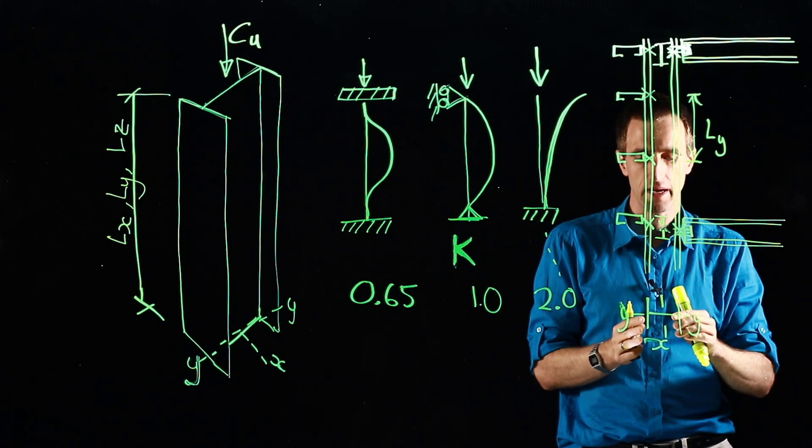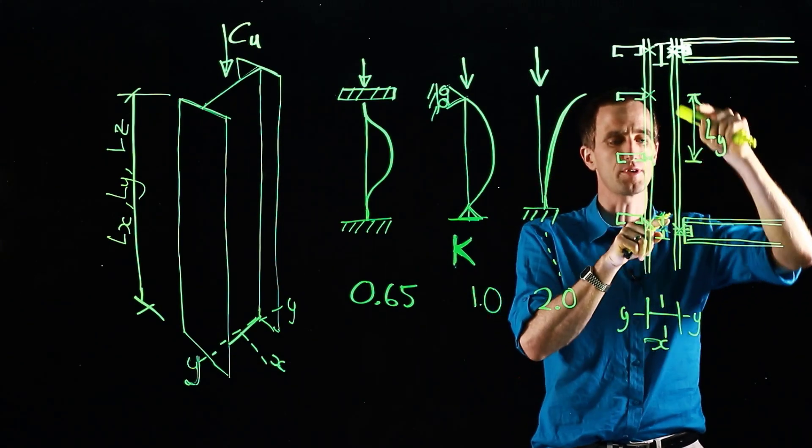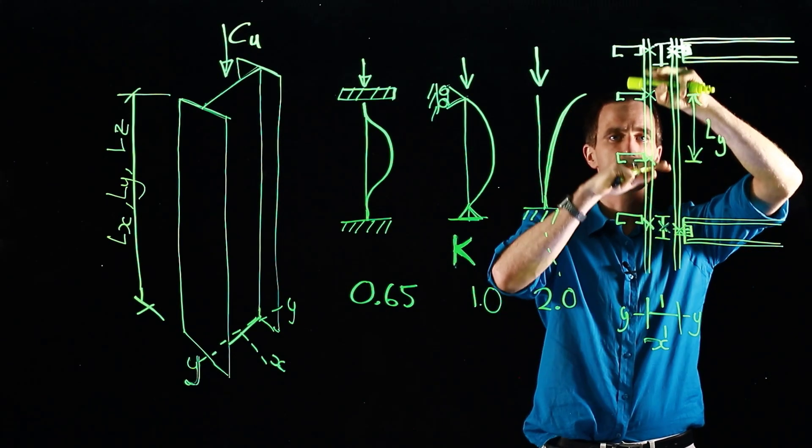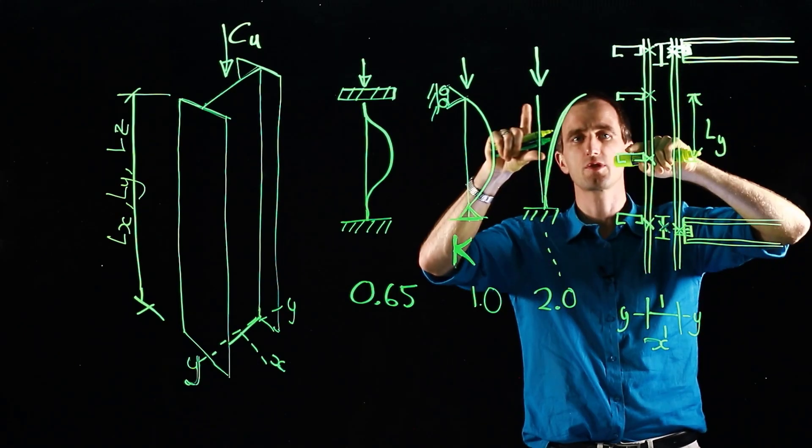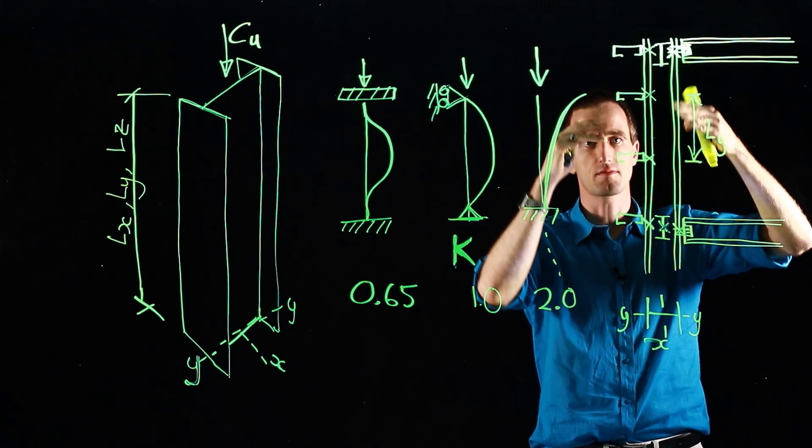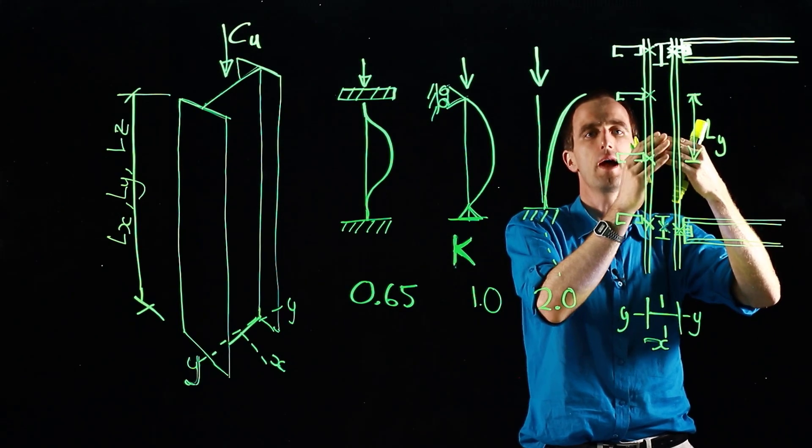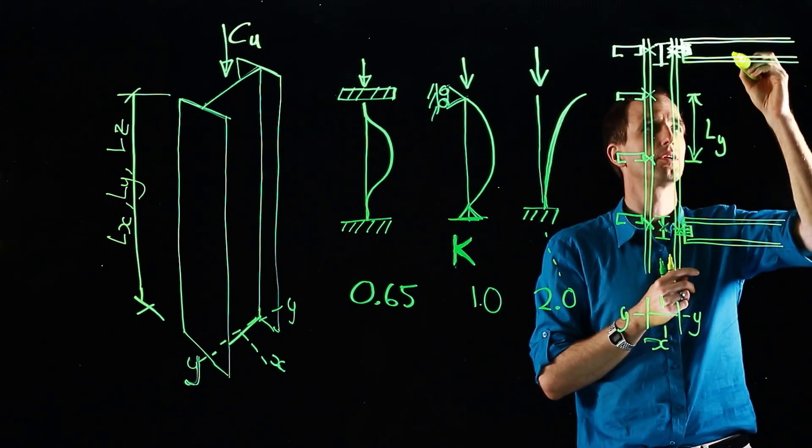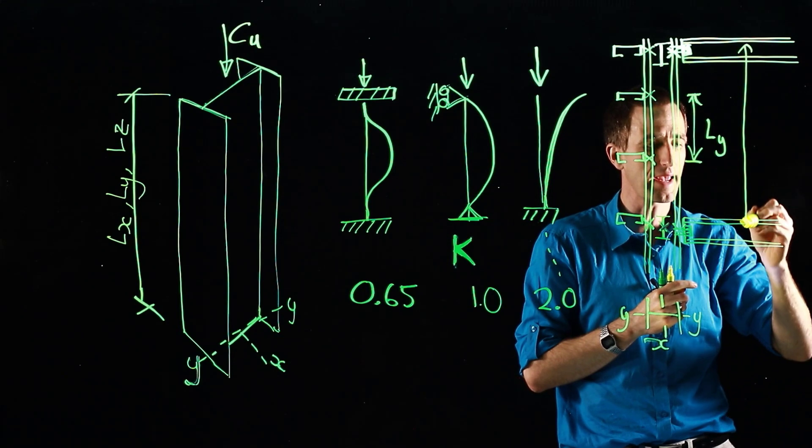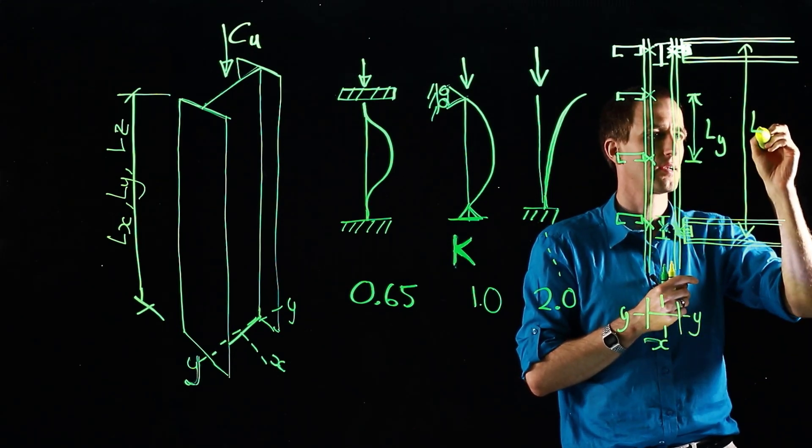But then about LX, there's nothing preventing buckling between there and there. Because if the section tries to buckle, the girts will just move with it. They are fixed to the column, and so they just move with it. And so we end up with an LX like this.